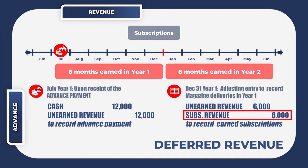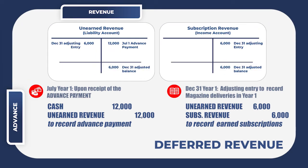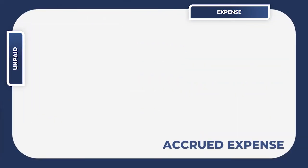If we follow the ledgers of these accounts, you will see that the subscriptions revenue account has 50% of the payment while the unearned revenue in the balance sheet has the remaining 50%. The unearned revenue represents the portion of magazines that are yet to be delivered in the coming months. We now come to the expense section of the discussion, starting off with accrued expenses.